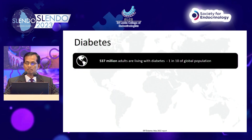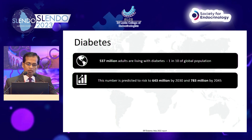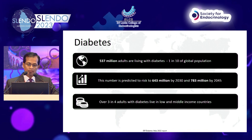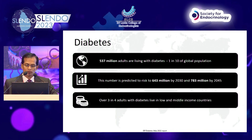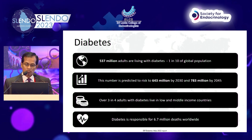Ladies and gentlemen, we need to look at diabetes: there are 537 million adults living with diabetes — one in ten of the global population — and this number is predicted to rise to 643 million and then to 703 million in 2045. Over three out of four adults with diabetes are living in low and middle income countries, and diabetes is responsible for about 6.7 million deaths worldwide.